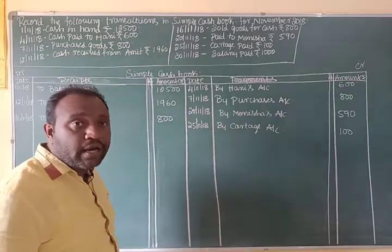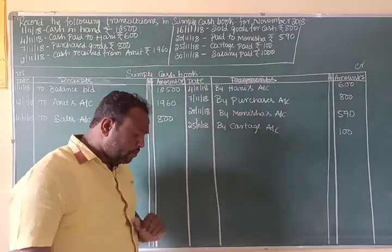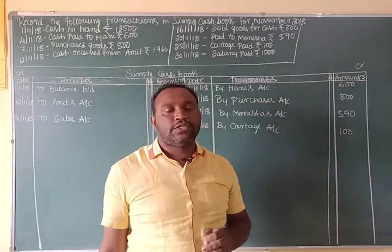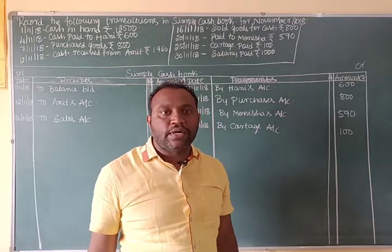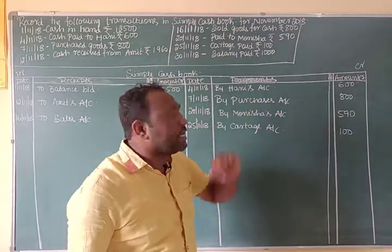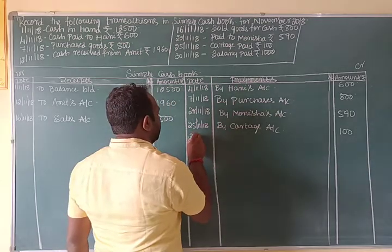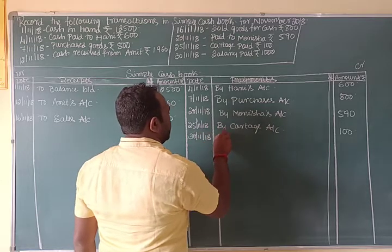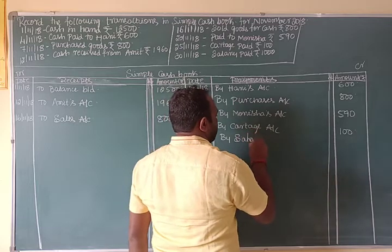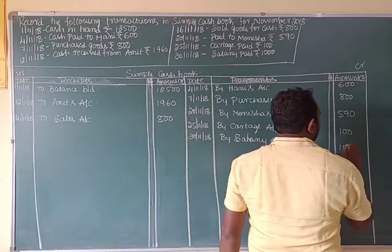30th November 2018: salary paid. The general entry is: Salaries Account debit, To Cash Account. Since it is an expense, it should be taken into the payment side. Entry: 30th November 2018, By Salary Account — Rs. 1,000.